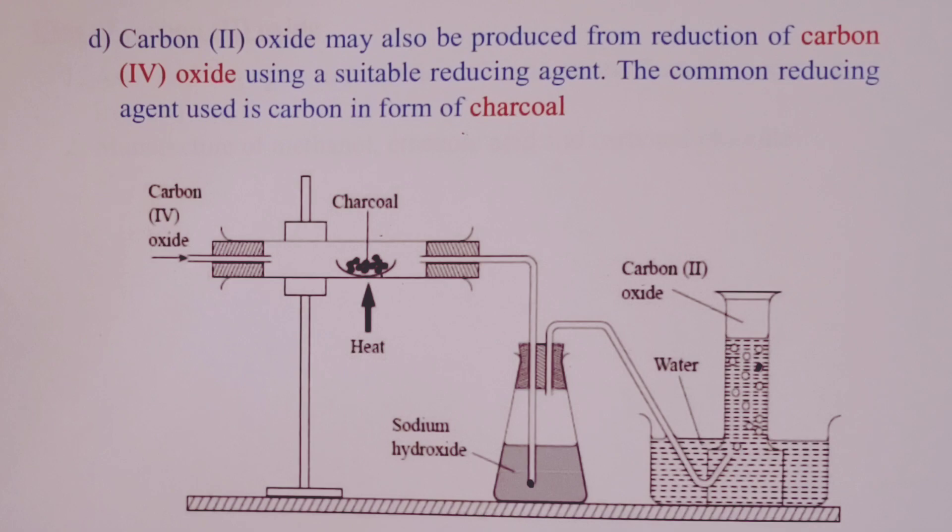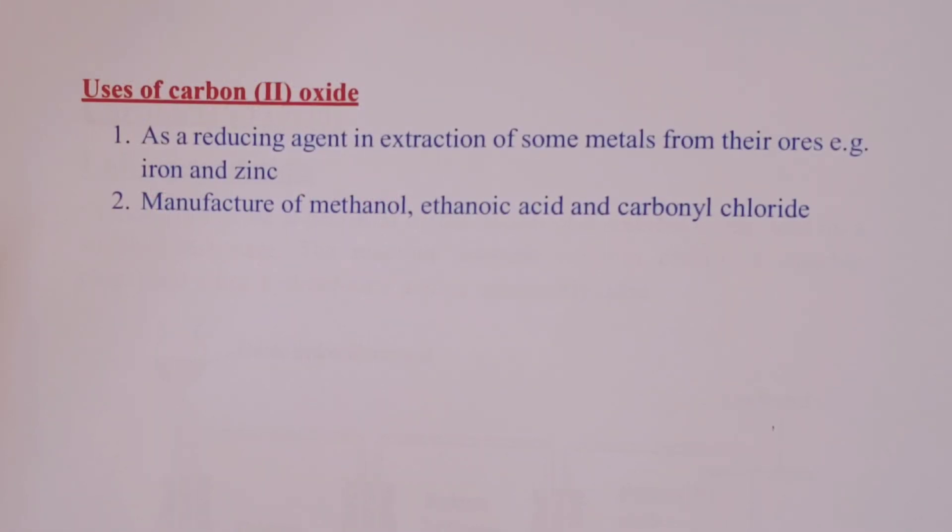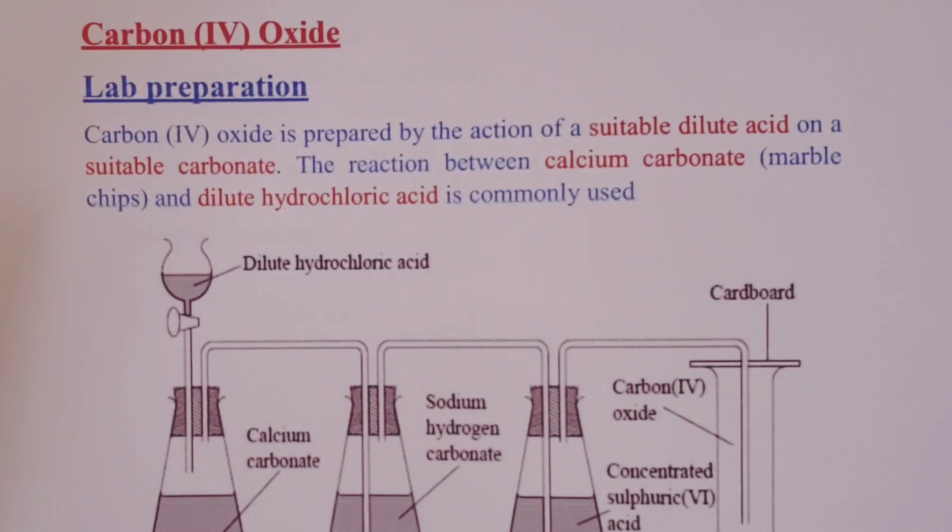Before we cross over to carbon (IV) oxide, let's have a look at the uses of carbon (II) oxide. Carbon (II) oxide is mainly used as a reducing agent in extraction of metals from their ores. These metals are those that are either moderately reactive or not reactive. So in that category, we have examples of iron or zinc. Carbon (II) oxide is also used in industry to manufacture methanol, ethanoic acid and carbonyl chloride.